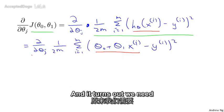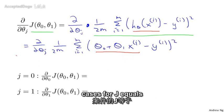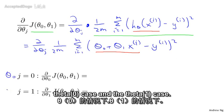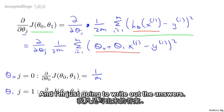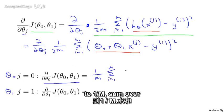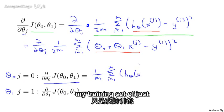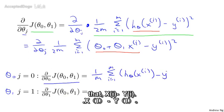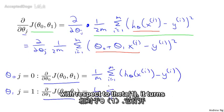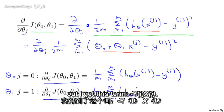It turns out we need to figure out what this partial derivative is for two cases: for j equals zero and for j equals one. So we want to figure out the partial derivative for both the theta zero case and the theta one case. The first term simplifies to one over m, times the sum over my training set of h(x_i) minus y_i. And for the partial derivative with respect to theta one, I get that term times x_i.